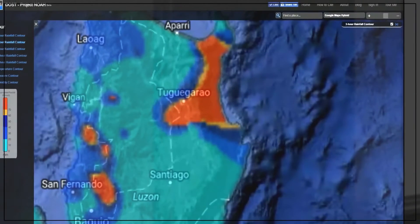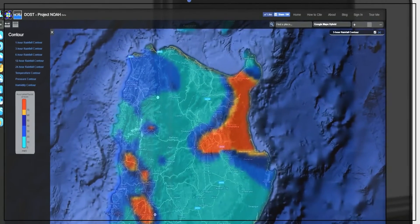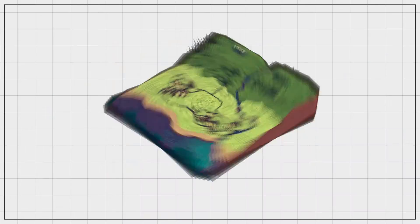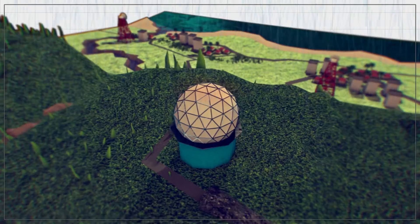Areas in red and yellow are experiencing intense to torrential rain. There is a higher possibility of landslides and flooding occurring in these areas due to continuous heavy rainfall.